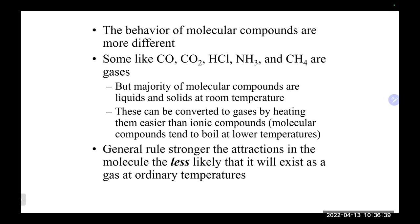Things like carbon monoxide, carbon dioxide, hydrogen chloride gas, ammonia gas, and CH4 which is methane — the simplest organic compound, the stuff that comes out when we light a Bunsen burner — all exist as gases under normal conditions. The major difference is that molecular compounds are held together by weaker intermolecular forces, making it much easier to convert them into a gas than an ionic compound.